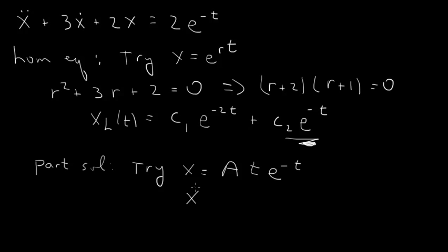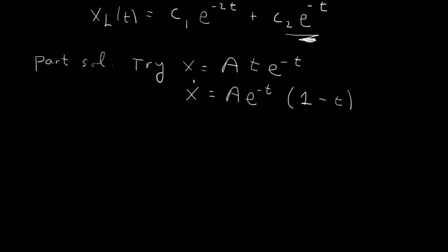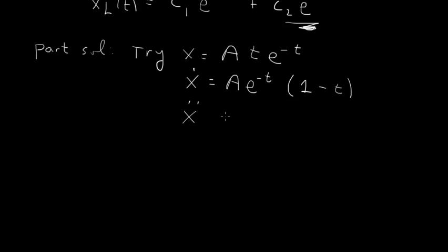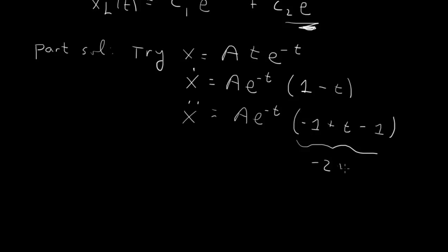When we substitute into the differential equation, we'll end up with — for the first derivative — an A times e to the minus t, and then the derivative of the first factor gives A times the second plus the first times the derivative of the second, giving a minus t term. For the second derivative, we'll again have an A times e to the minus t, and then the derivative of the first gives a minus 1 plus t term, plus the first times the derivative of the second gives a minus 1. So altogether the second derivative has a minus 2 plus t term.